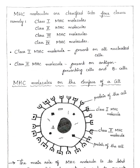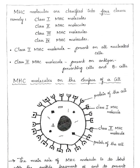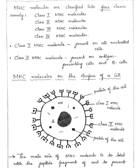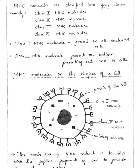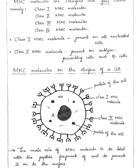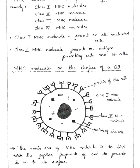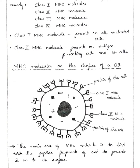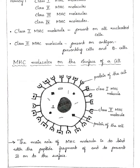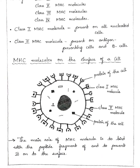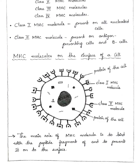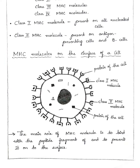Coming to the structure of MHC molecules, here you can see the structure of MHC molecules on the surface of a cell. The square-shaped MHC molecules refer to Class 1 and the curved-shaped molecules refer to Class 2 MHC molecules. Inside it has a nucleus and proteins of the cell. The main role of MHC molecules is to bind with the peptide fragment of antigens and to present them on the surface of cells.